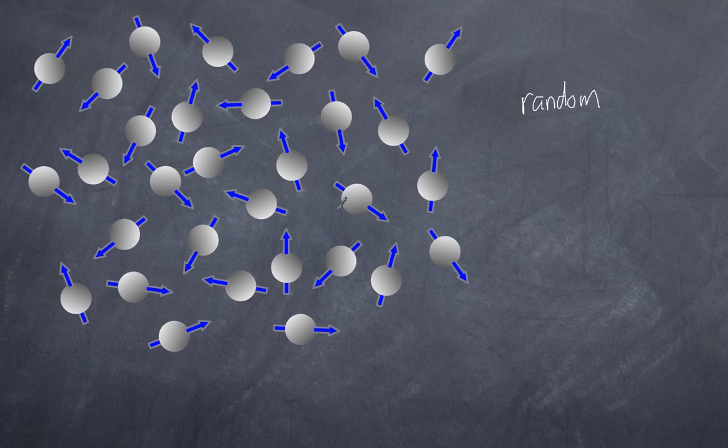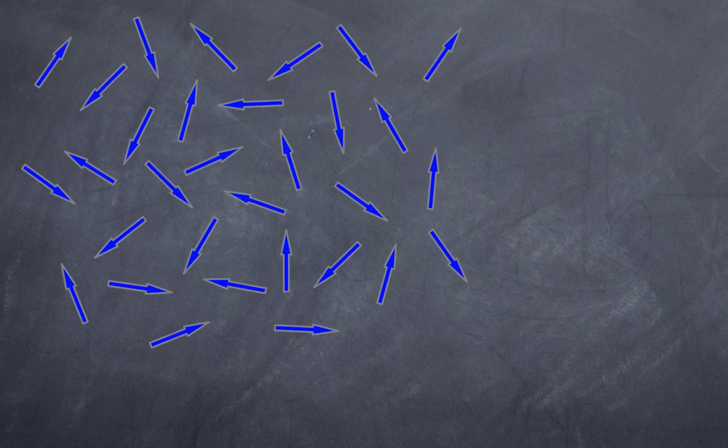The net result, of course, is that all of them are pointing in various random directions. Because they're not aligned in any way, you don't walk around acting like one big giant magnet. For simplicity's sake, what we're going to do is remove the balls that represent the protons and just look at their magnetic moments.